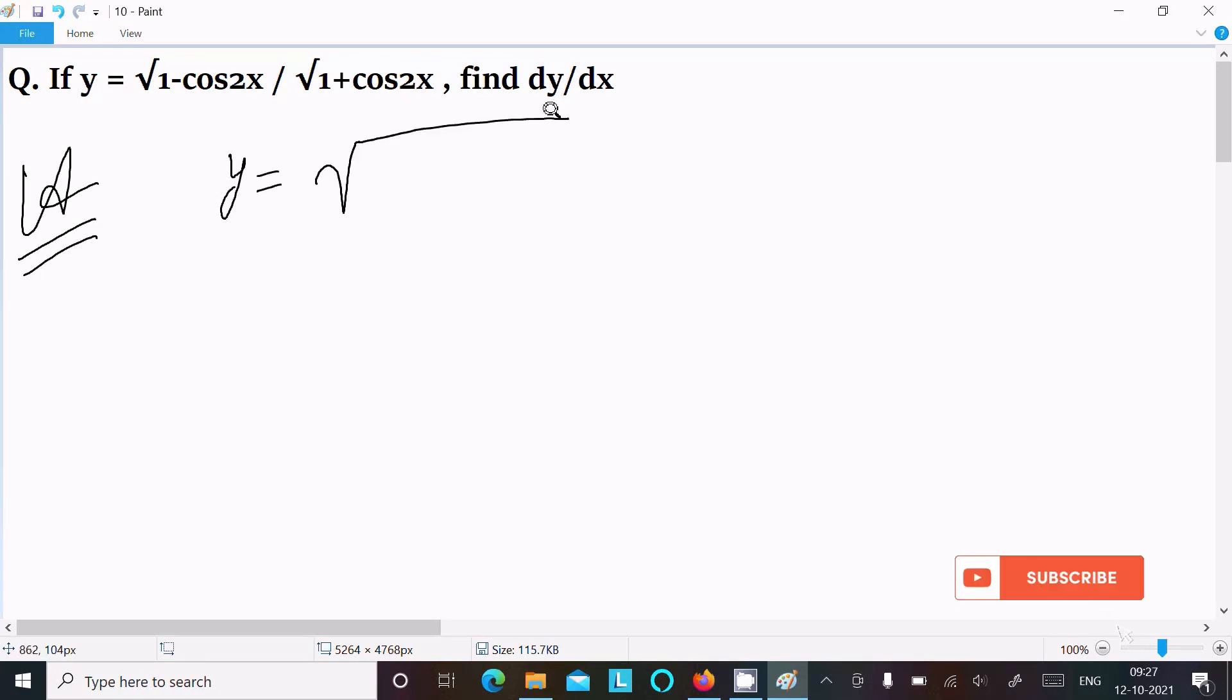We have the formula about 1 minus cos 2x that is equal to 2 sin squared x.